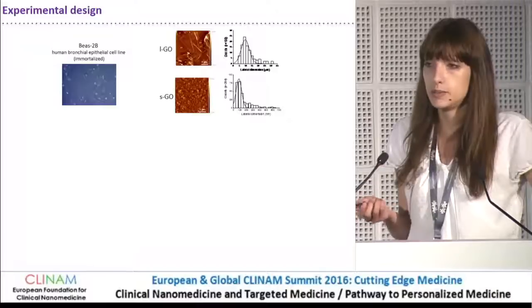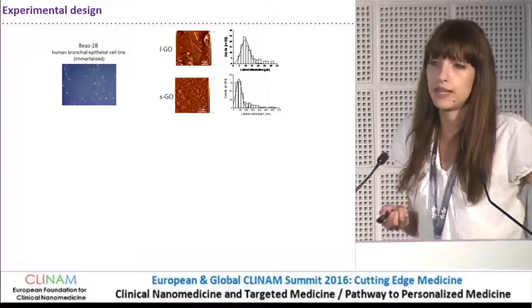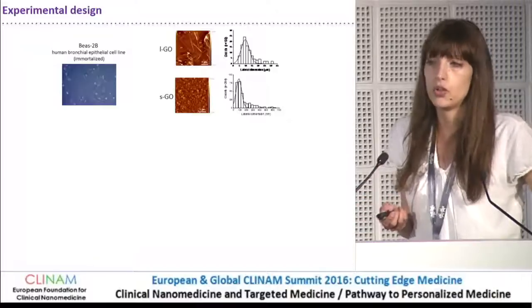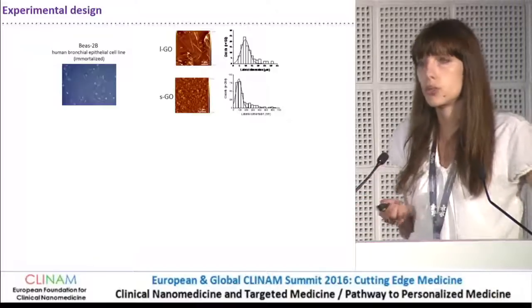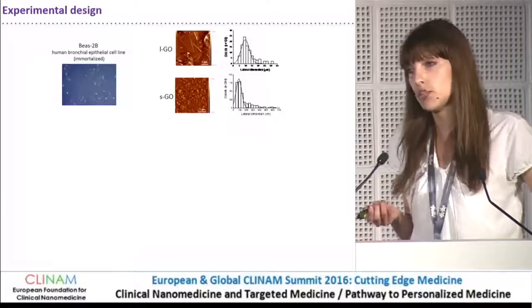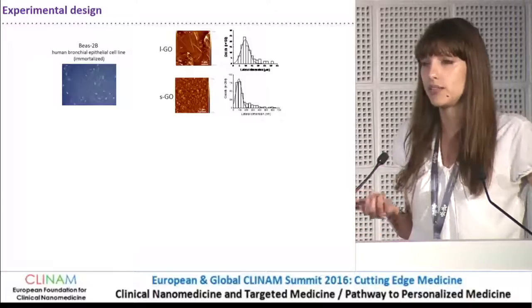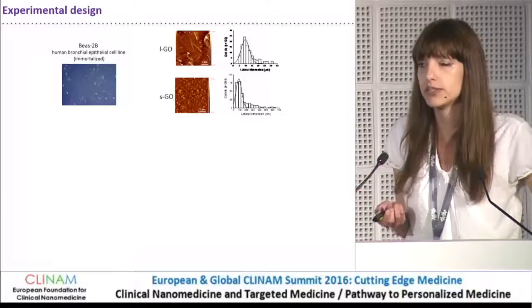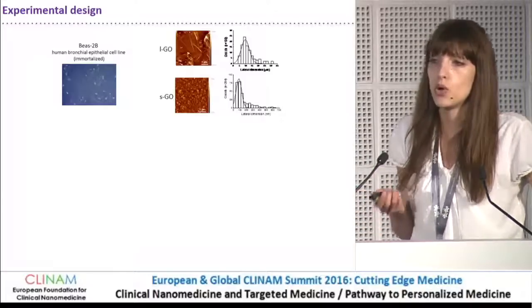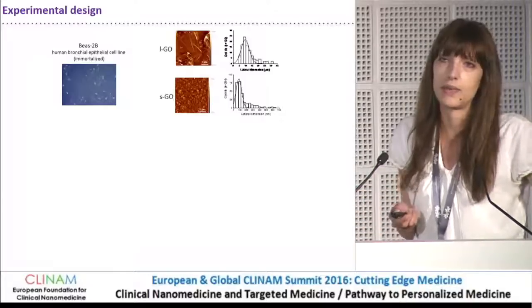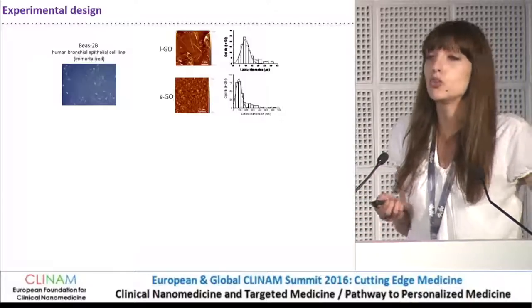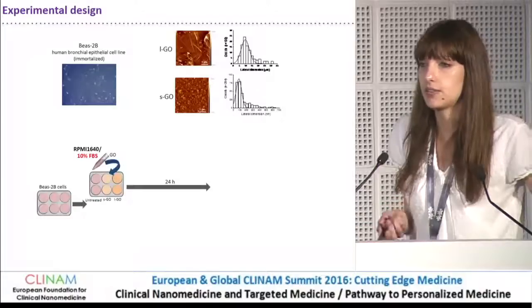With this purpose, we synthesized two types of graphene oxide: large, with lateral dimensions between 5 and 15 micrometers, and small, with lateral dimensions below 200 nanometers.